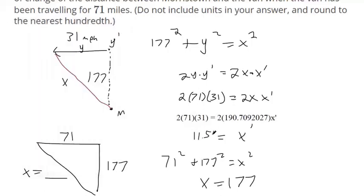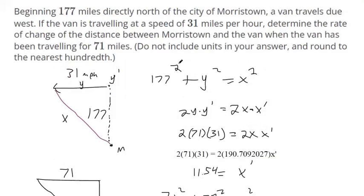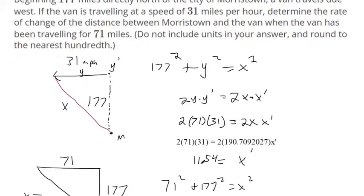And it says we don't have to worry about the units. But just so we know, this is miles per hour. This is miles. And we differentiate with respect to time in terms of hours. So that would be 11.54 miles per hour is how fast that distance is changing.